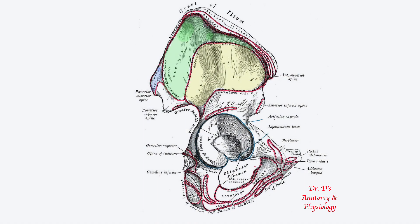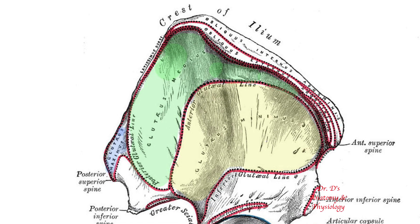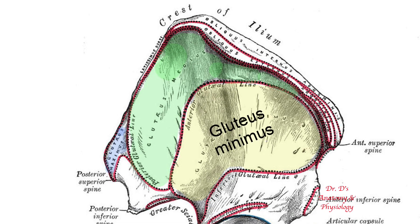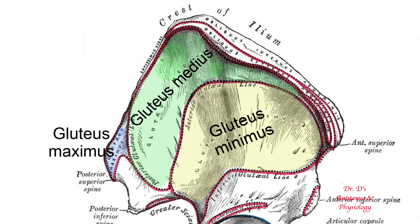If we shift to this image from Gray's Anatomy, we can see the precise location of these gluteal lines. Between the inferior and anterior gluteal lines, we find the origin of the smallest gluteal muscle, the gluteus minimus. Then between the anterior gluteal line, the iliac crest, and the posterior gluteal line, we find the origin of the gluteus medius. And finally, behind the posterior gluteal line, we find the place where the largest gluteal muscle, the gluteus maximus, attaches to the ilium.